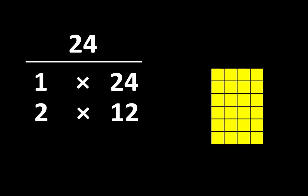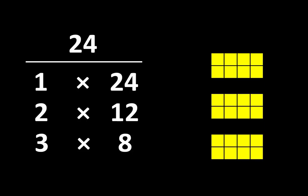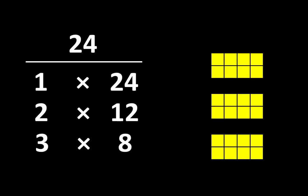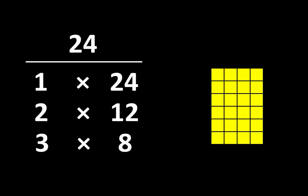We can also break 24 apart into 3 groups of 8. Here is one way to show 3 groups of 8. And we know that if we can make 3 groups of 8, then we can also make 8 groups of 3. So we can think of it both ways — we can move them back to 3 groups of 8, and we know that the total is still 24.